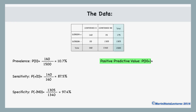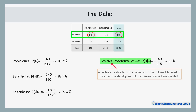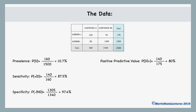The positive predictive value is the probability of having the disease given that they tested positive. We can see that 175 people tested positive, and out of those, 140 actually developed the disease, so the positive predictive value is 140 out of 175, or 80%. This can be considered an unbiased estimate as the individuals were followed forward in time and the development of the disease was not manipulated — unlike a case-control type study design. The negative predictive value is the probability of not having the disease given that they tested negative. 1,325 people tested negative, and of those, 1,305 did not have the disease, so the negative predictive value is 1,305 out of 1,325, or 98.5%.